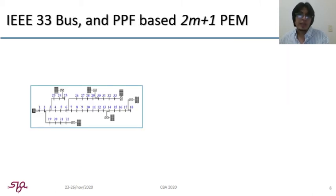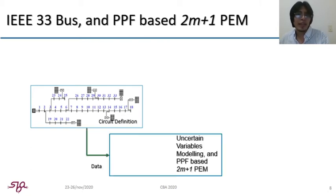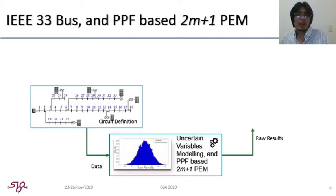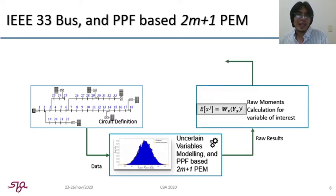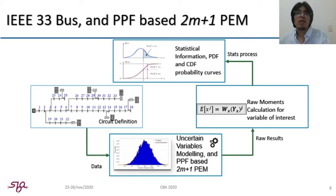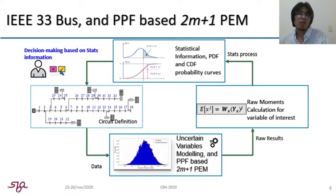From this point ahead, case study and results will be presented. Basically, the process goes on defining the circuit and certain variable modeling calculation of raw moments. Using this information, statistical analysis such as expected and standard deviation as well as probability curves can be calculated. And this information is of special interest for the system operator for decision making to accept or not a higher or lower value of probability regarding over voltages, power flow reverse and assets utilization.